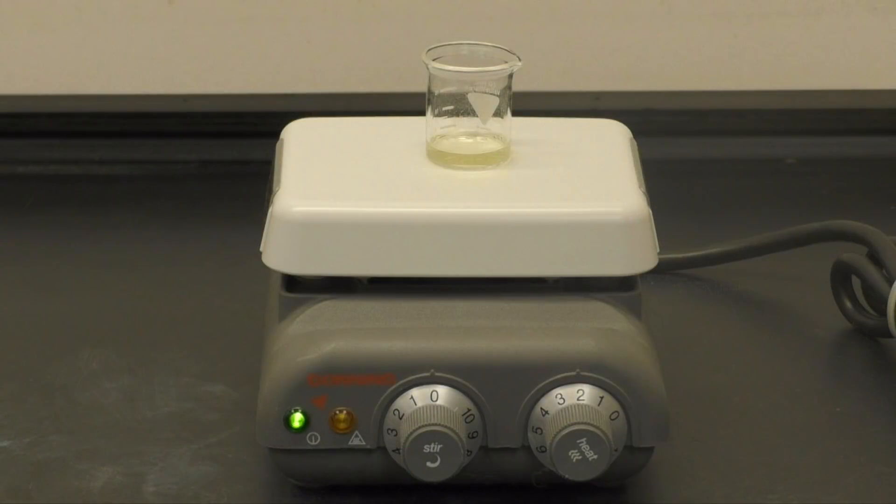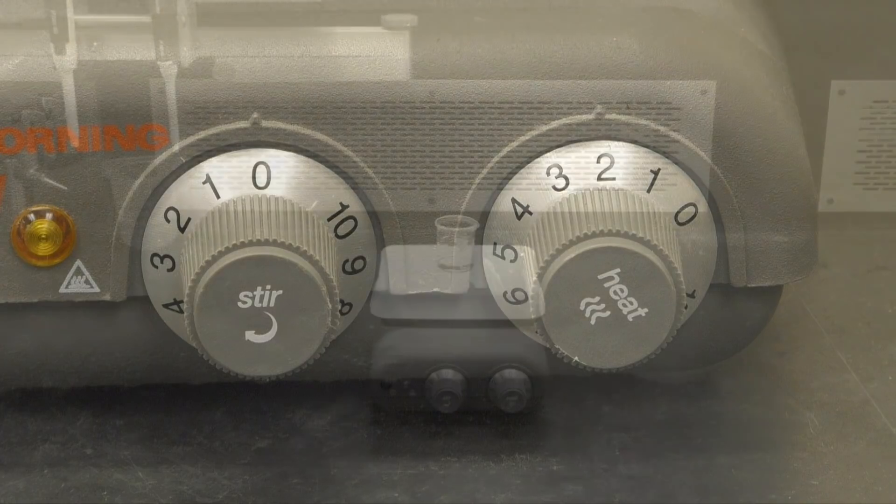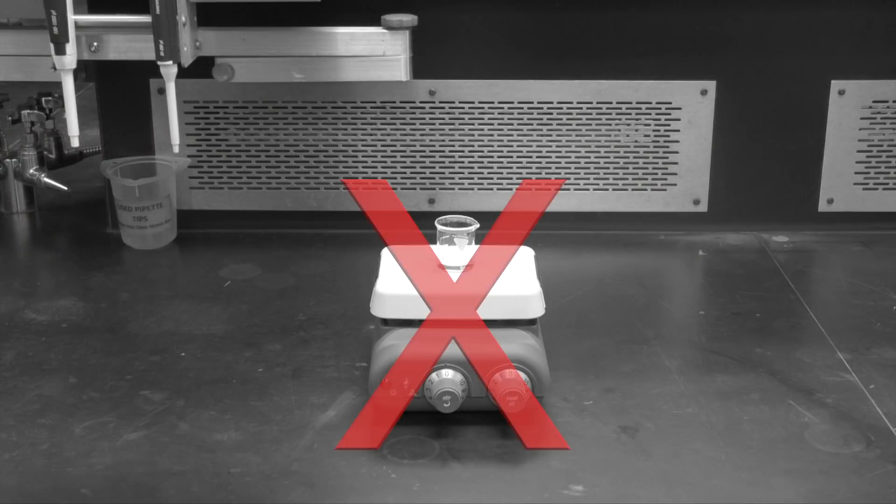Now place your beaker on the hot plate in the fume hood and turn the heat on low. Don't turn the knob past three, as high heat can evaporate both the solvent and the lipids you are trying to isolate. Never evaporate the solvent outside of the fume hood, as inhalation of the vapors can cause dizziness, headaches, and irritation of the eyes, nose, and throat.